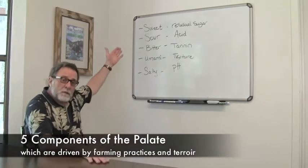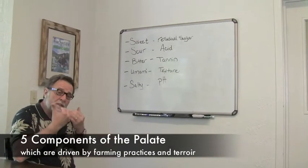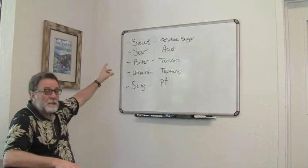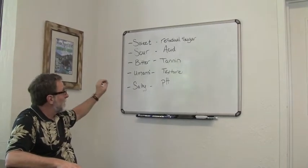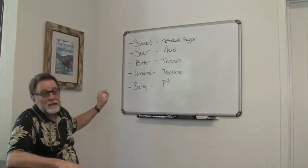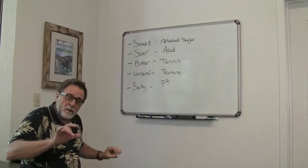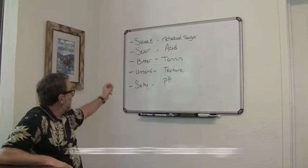The five components that you can taste—this is not smell, but what you actually taste—are sweet, sour, bitter, umami, and salty. And each one of those stands for a component in the wine that you taste.